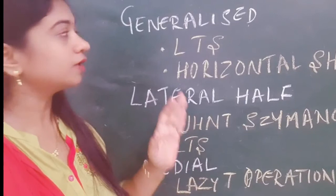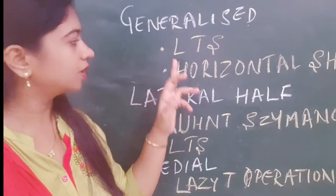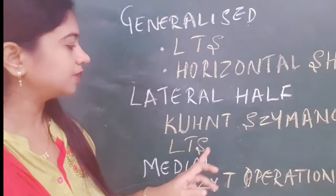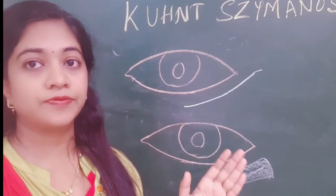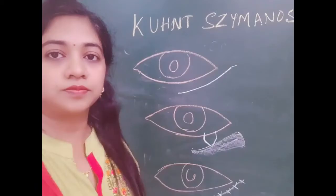Coming to the surgeries for involutional ectropion: if it is generalized involving the whole length of the lower eyelid, then you can go for lateral tarsal strip or horizontal shortening of the eyelid. If it is involving only the lateral half, then the Kunt-Zymanowski procedure or the lateral tarsal strip can be done. If it is involving only the medial half, then you should go for a laxity operation. The surgery for horizontal lid laxity — that is the lateral tarsal strip and horizontal lid shortening — I have explained in my entropion videos; you can go back and see there.